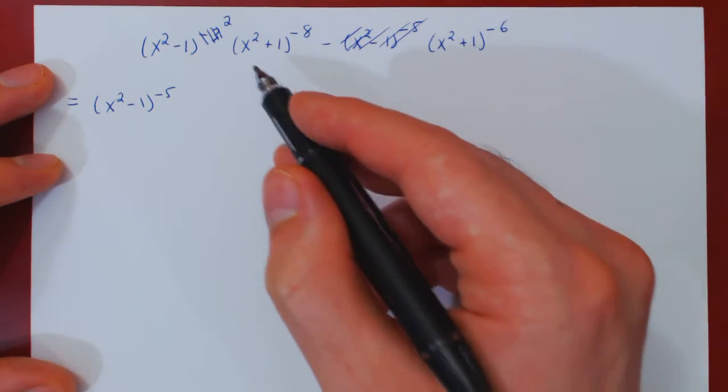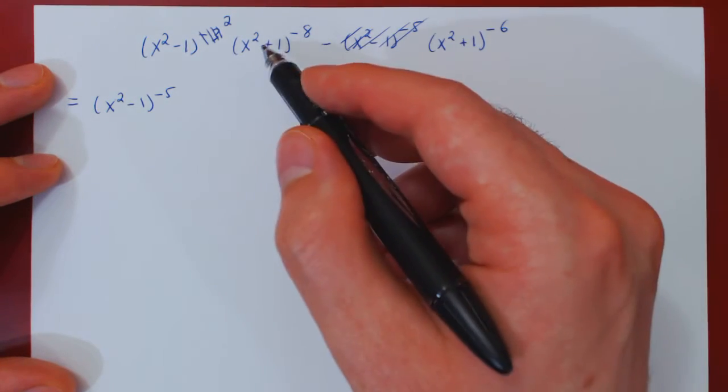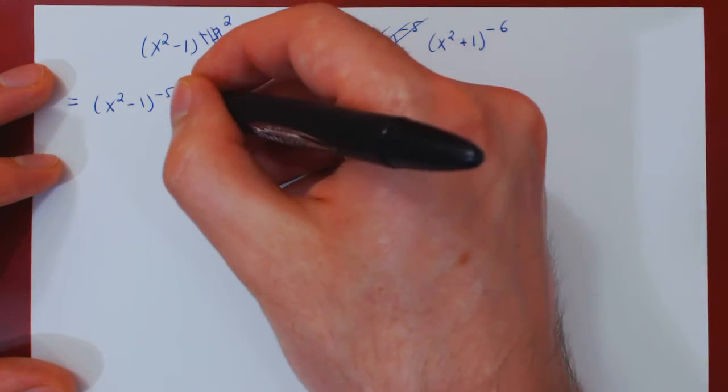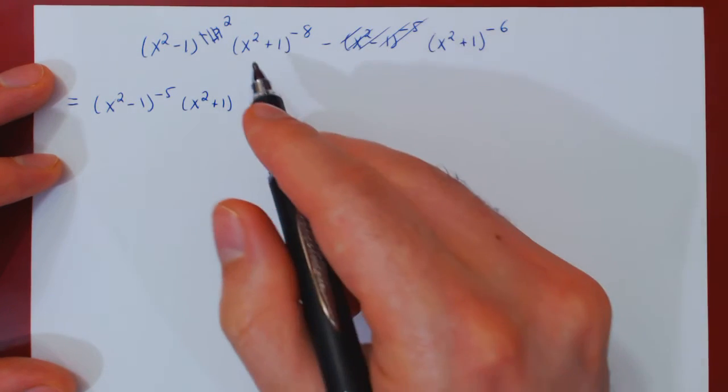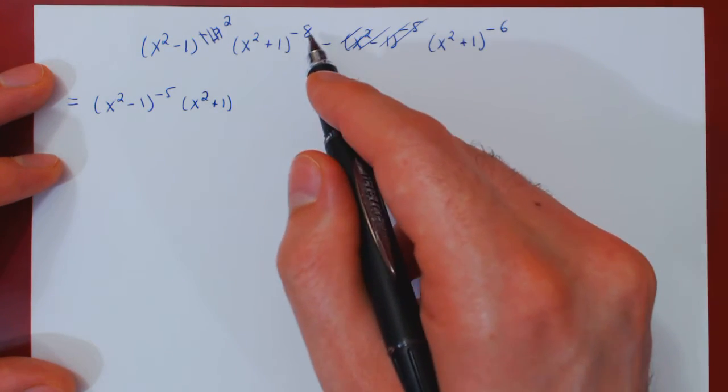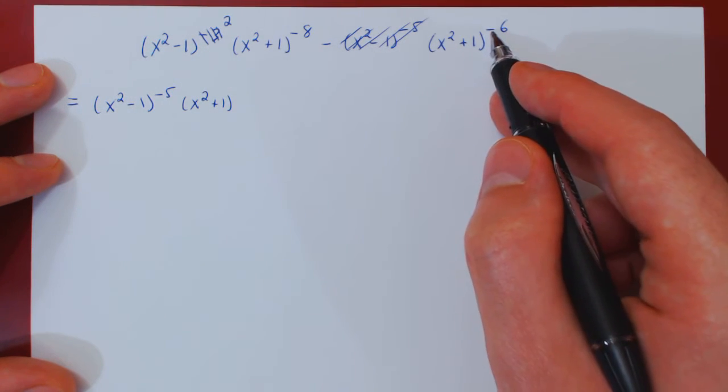There is another common factor between both the first and the second term, and that is the x squared plus 1. In the first case, the power is negative 8, and the second, negative 6. Negative 8 is less than negative 6.